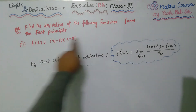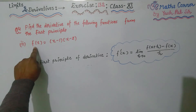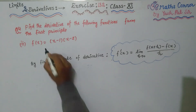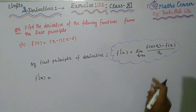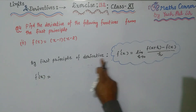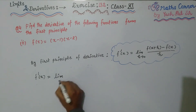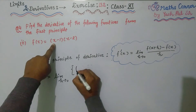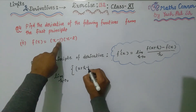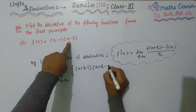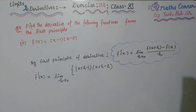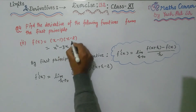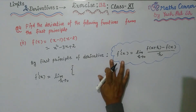Second part: f(x) = (x−1)(x−2). By the first principle, f'(x) = limit h→0 of [f(x+h) − f(x)] / h. We can first multiply out: (x−1)(x−2) = x² − 3x + 2. Replacing x with x+h: f(x+h) = (x+h)² − 3(x+h) + 2. So f'(x) = limit h→0 of [(x+h)² − 3(x+h) + 2 − (x² − 3x + 2)] / h.